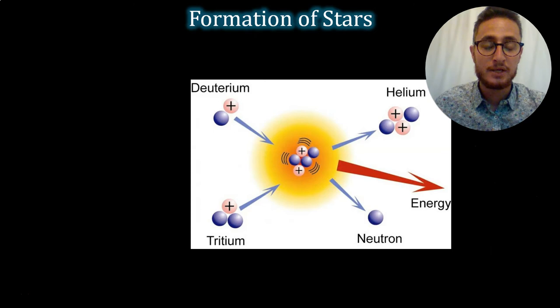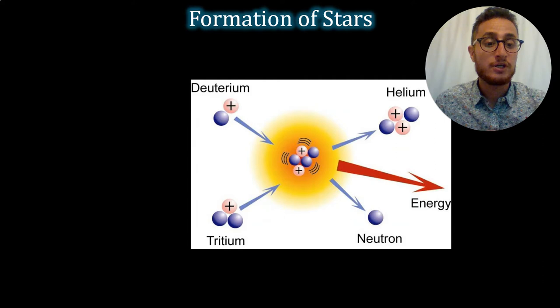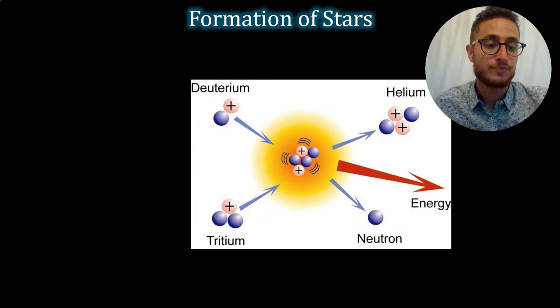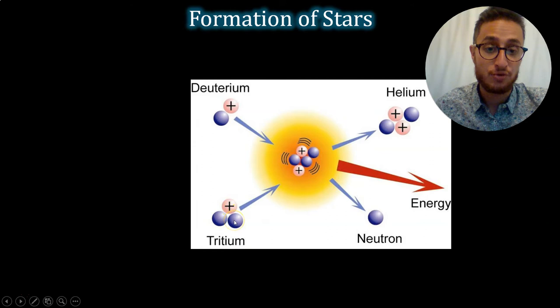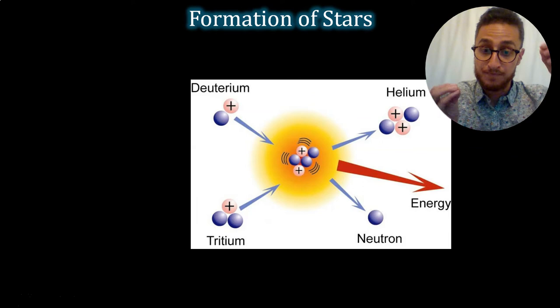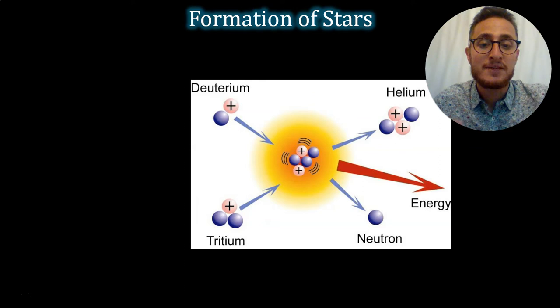So inside of a star, which is made mostly of hydrogen and helium, the hydrogen comes in two main isotopes. Here we have deuterium with a mass of two. It's a proton and a neutron. And we have tritium with a mass of three, proton and two neutrons. And when those enter the core of the star, the pressure and the gravity is so intense that these atoms will actually fuse into a single atom.